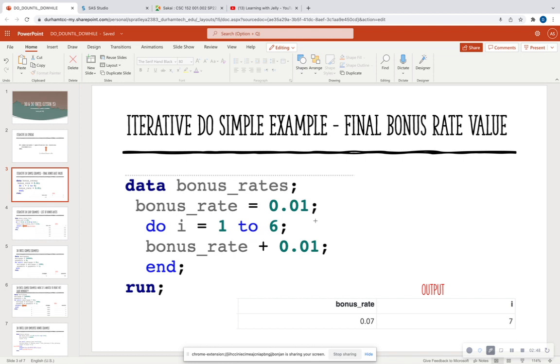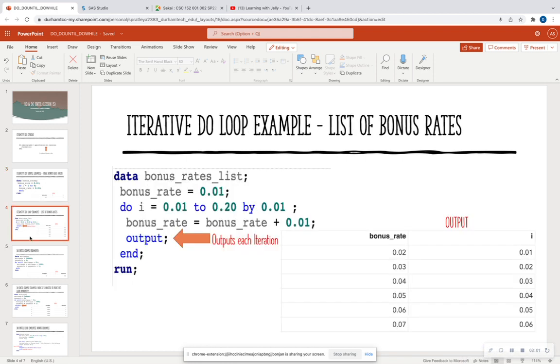Now, what if I want to output all of the iterations? That's what our next slide is going to talk to us about, is outputting all of the iterations. We see in our next slide that now I have this keyword output statement here. This output statement is going to output each one of my iterations. So on my first iteration, I'm going to get 2%, the next one 3%, 4%, and so forth.